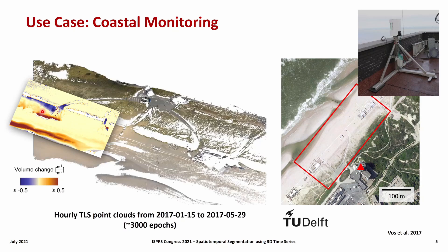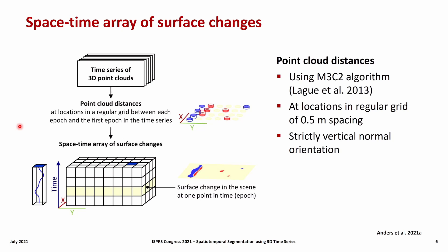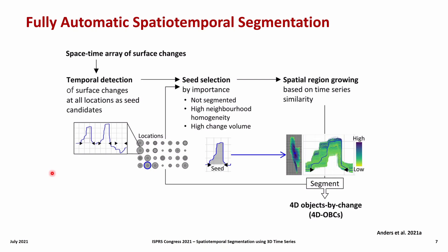As input for our method, we calculate point cloud distances using the M3C2 algorithm for each epoch to the first epoch as global reference. This is done at locations in a regular grid and thereby creates a 3D array of surface changes with 1D time series at each 2D location in the scene. This space-time array is the input for spatial-temporal segmentation to automatically extract 4D objects by change.